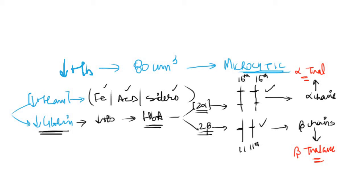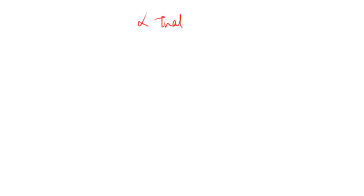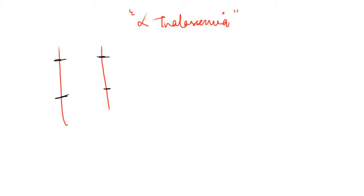Let's take on the alpha thalassemias first. In case of alpha thalassemia, there is decreased production of alpha chains. The alpha genes are 4 genes located on the 16th chromosome — 2 on the paternal side and 2 on the maternal side. Alpha thalassemias are caused due to gene deletion, and there will occur deletion of one or more alpha chain genes.